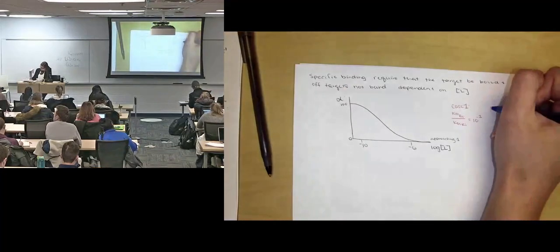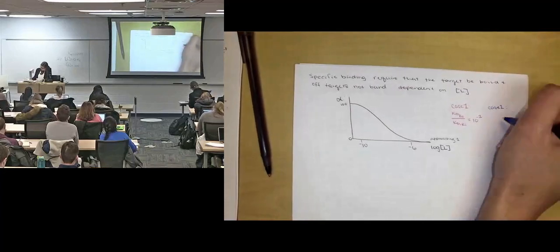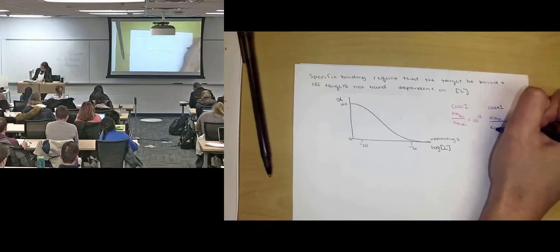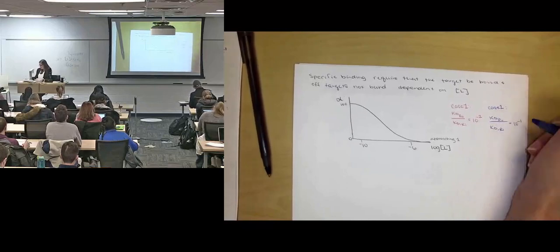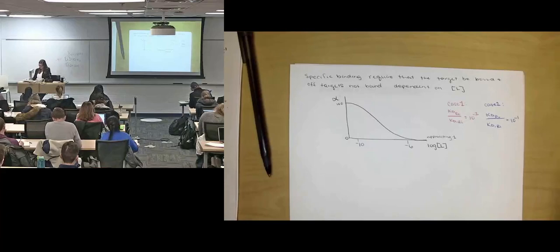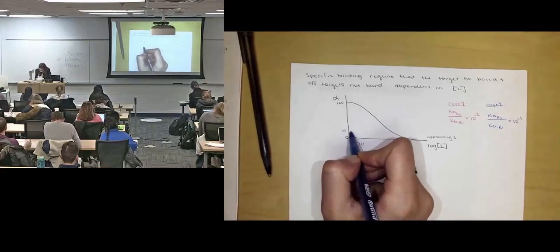And then in case 2, if we have the ratio of KD for our target to our off-target is only a difference of 10, then we're going to have a curve that looks something like this.